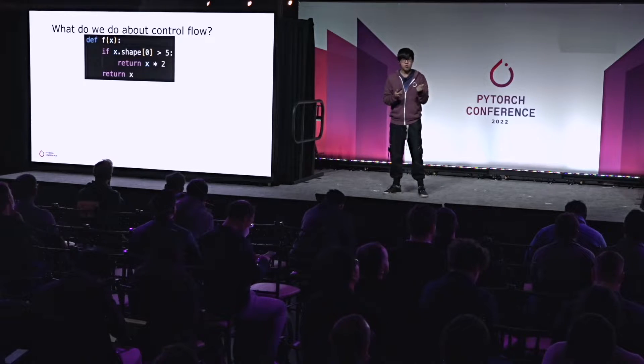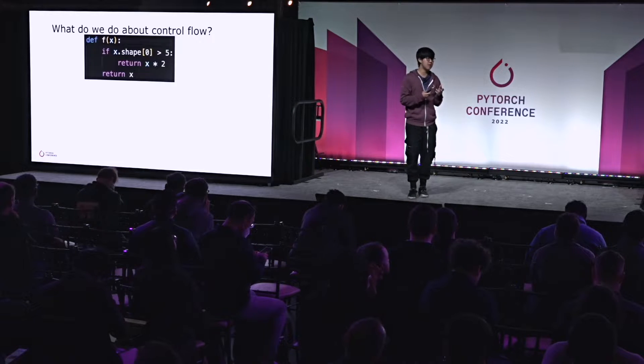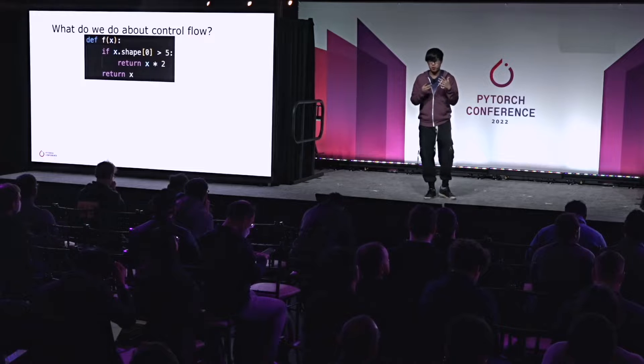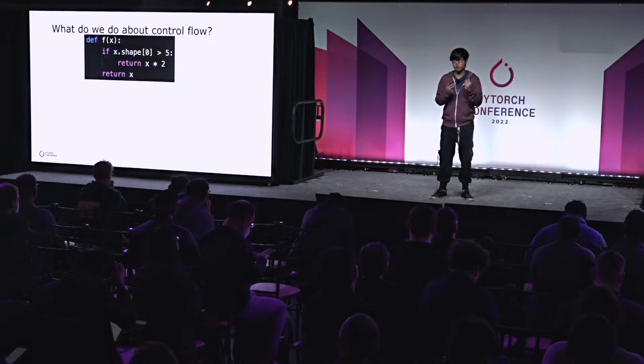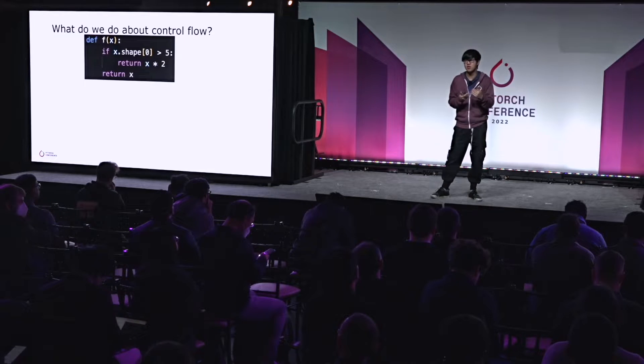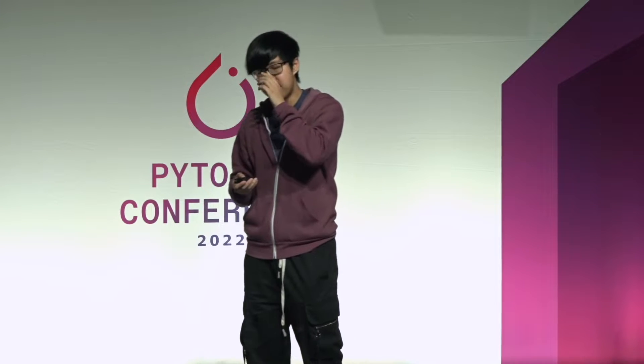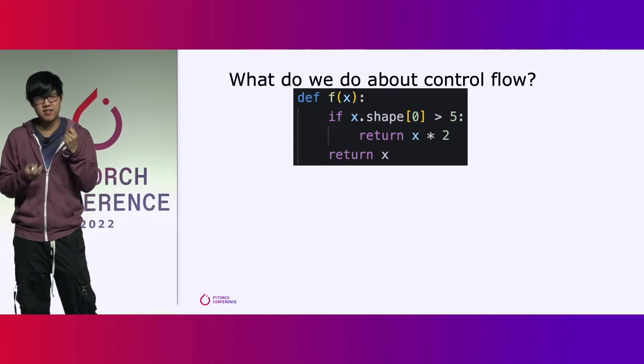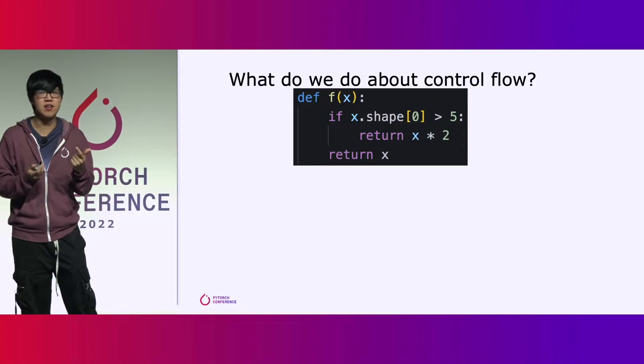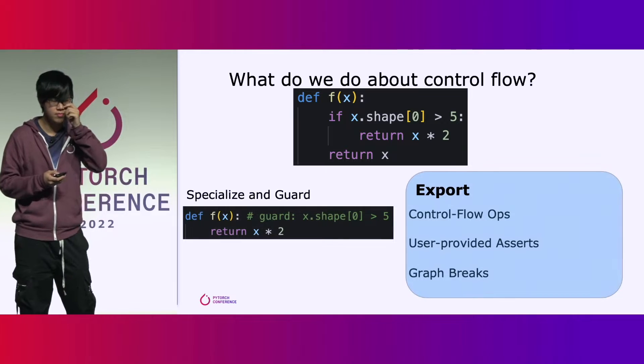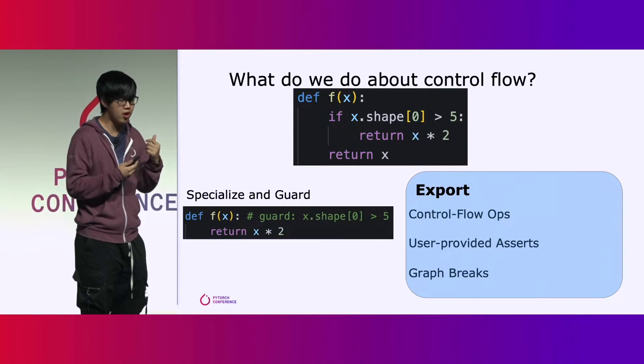The other way your program can depend on shapes is indirectly through control flow. There are two key observations that motivate our design. First, control flow is a very useful source of information about the shapes in our program — for example, if you do an operation between two tensors, oftentimes the shapes need to be identical, which lets us simplify our shape expressions. Second, it is actually fairly rare to branch extensively on control flow many times through the course of execution. This motivates our system, which we call specializing and guarding.